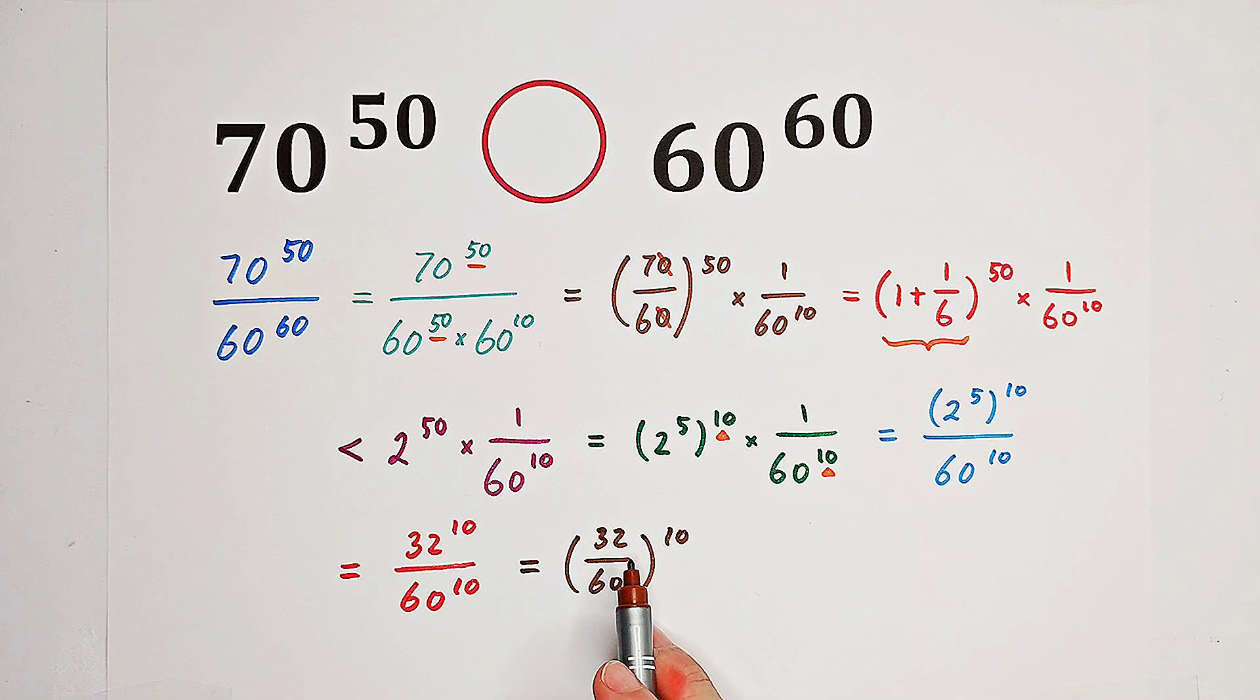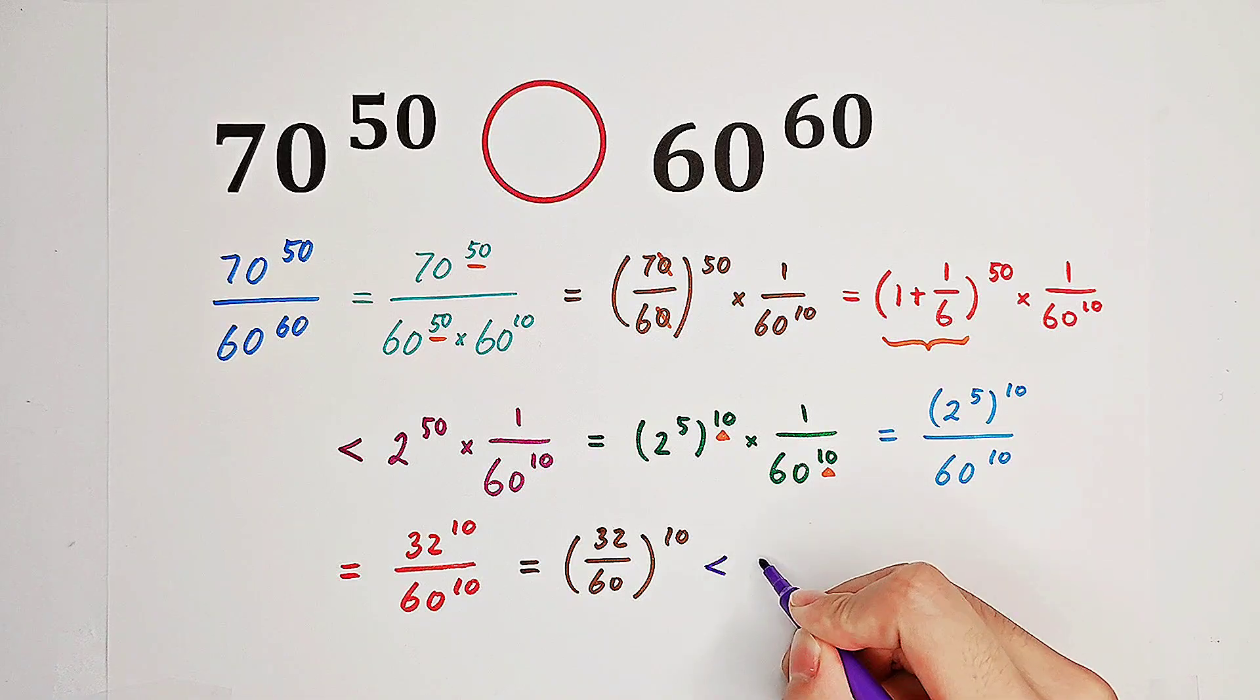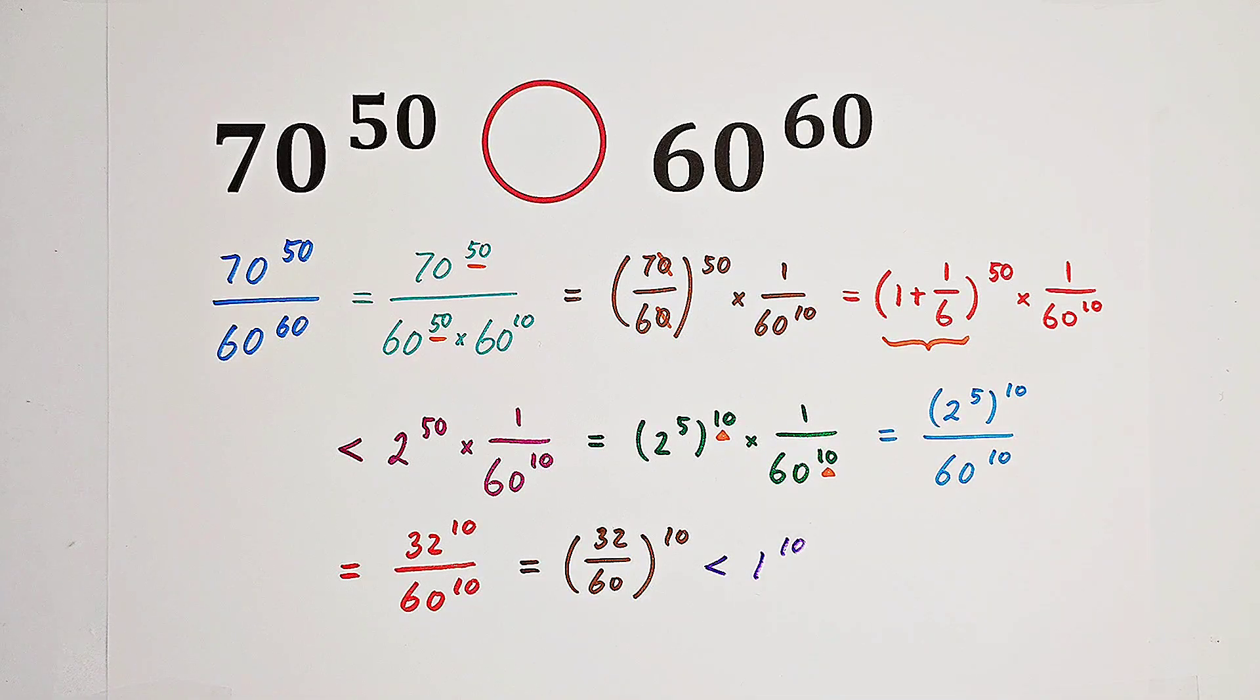We know that the numerator of 32 is less than the denominator of 60. So this fraction, this base, is less than 1. So it's less than 1 to the power of 10. And 1 to the power of 10 is 1.